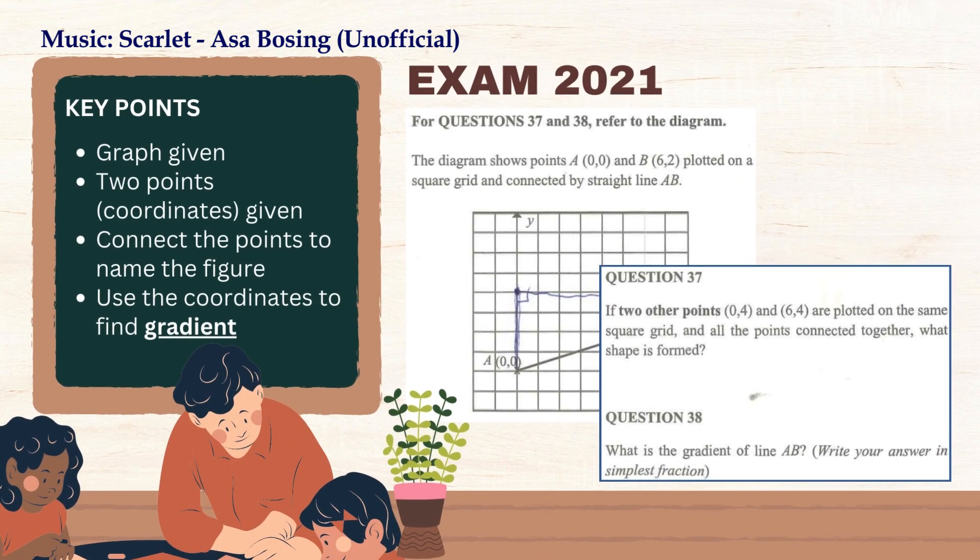Let's have a look at year 2021 exam, question number 37 and 38. Here the two questions are asking us to name the shape formed by joining the points and also find the gradient between the two points. Again, from our analytics, we have identified that the graph and the coordinates are already given.